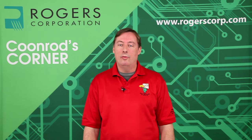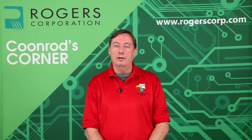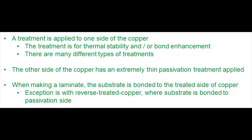After copper foil is manufactured, a treatment is typically applied to one side. This treatment is usually a metal alloy and is there for thermal stability as well as bond enhancement — there are many different types of treatments. The other side of the copper has a very thin passivation applied to it, and that's usually what we call the shiny side. Normally the substrate is bonded to the treated side of the copper, so when you look at a copper clad laminate you're looking at the shiny side.